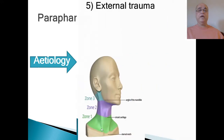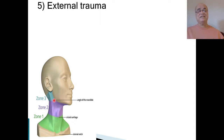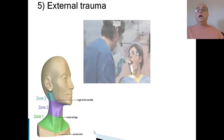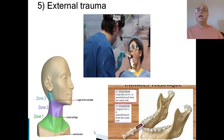Infection can also spread from adjacent spaces including the parotid space, retropharyngeal space, and submaxillary space. External trauma is another etiology, including penetrating injuries to the neck in zone two or zone three — zone one is below the clavicle, zone two is the middle, and zone three is upper. Additionally, injections for local anesthesia during laser tonsillectomy or mandibular nerve block injections by a dentist can introduce infection into the parapharyngeal space.